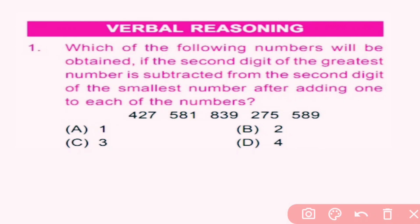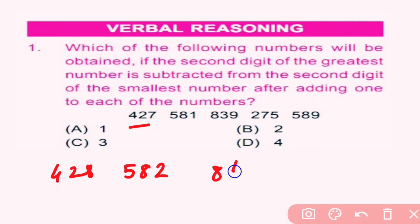Question number 1: which of the following numbers will be obtained if the second digit of the greatest number is subtracted from the second digit of the smallest number, after adding one to each of the numbers? After adding one to each number, we get: 427+1=428, 581+1=582, 839+1=840, 275+1=276, and 589+1=590.